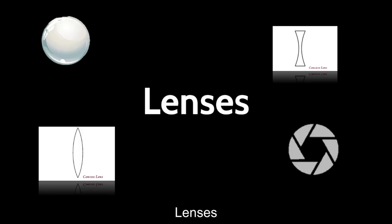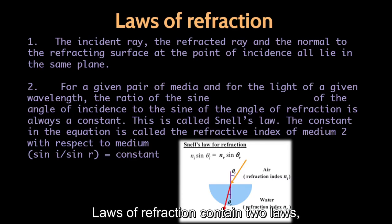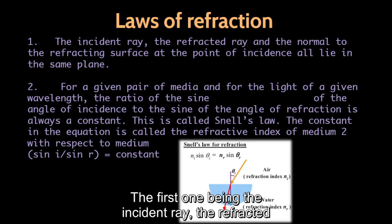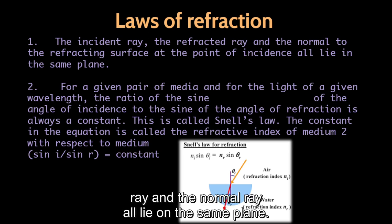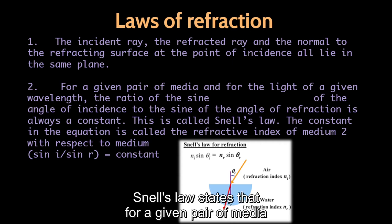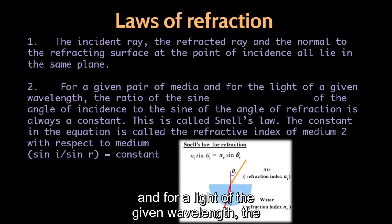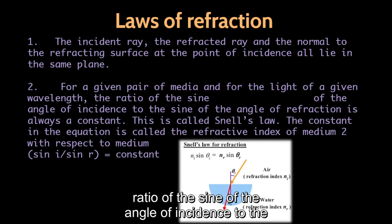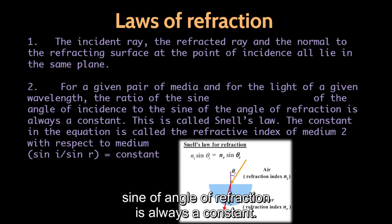Lenses. Laws of refraction contain two laws. The first being that the incident ray, refracted ray, and the normal ray all lie on the same plane. The second law being Snell's law, which states that for a given pair of media and for the light of a given wavelength, the ratio of the sine of the angle of incidence to the sine of the angle of refraction is always a constant.